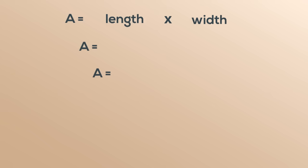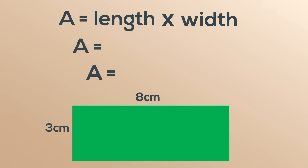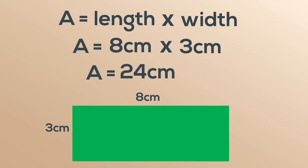Let's see if we can use this rule with another rectangle. Area equals length, which is 8 centimetres, times width, which is 3 centimetres. 8 times 3 is 24. This rectangle has an area of 24 centimetre squares.